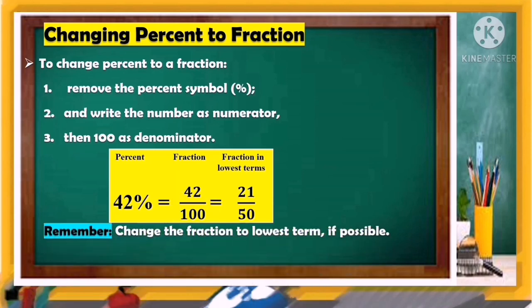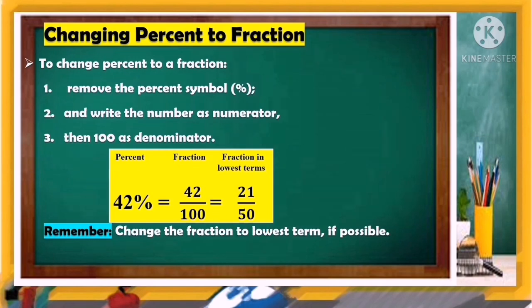But remember — change the fraction to lowest terms if possible. So 42 over 100 can be reduced to 21 over 50.